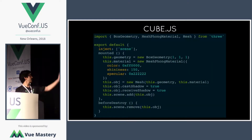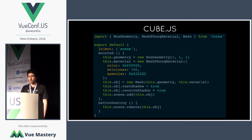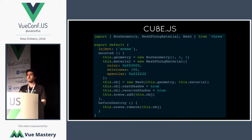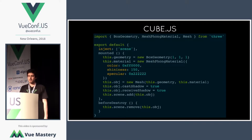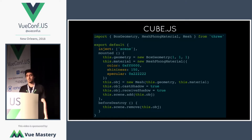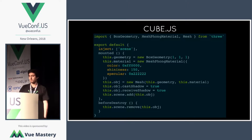The cube component injects the scene, creates a geometry, a material, and a mesh — which is the actual cube you see. It combines both things, adds itself to the scene, and removes itself from the scene when the component is removed from the DOM.